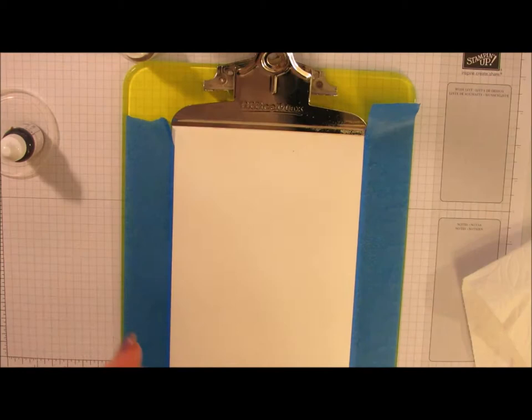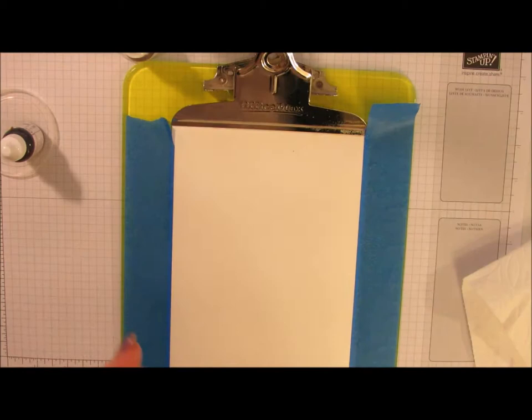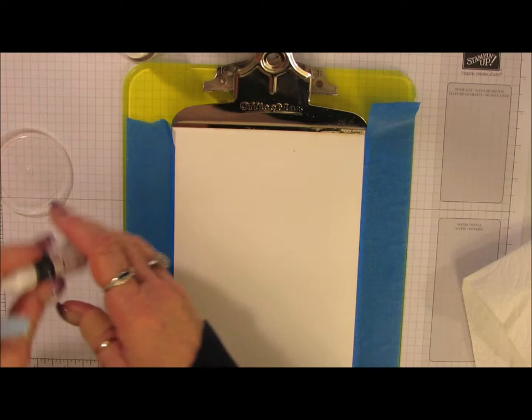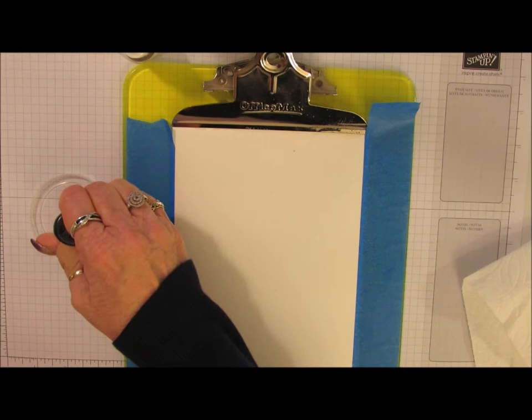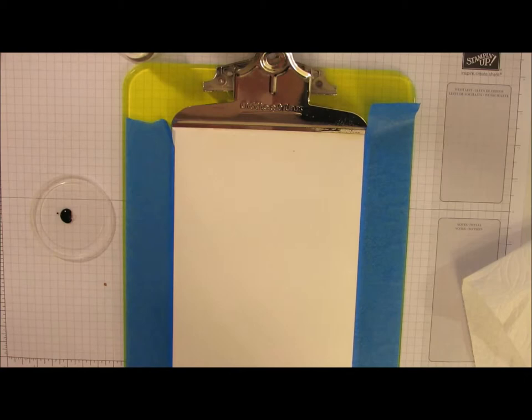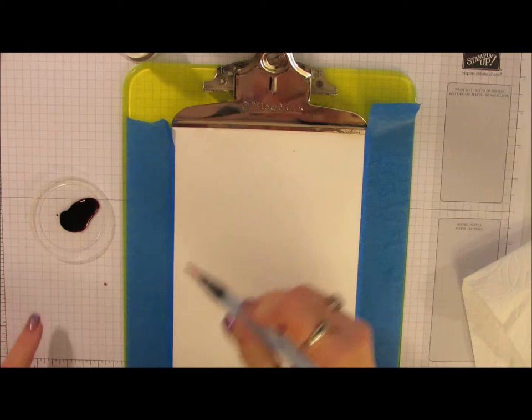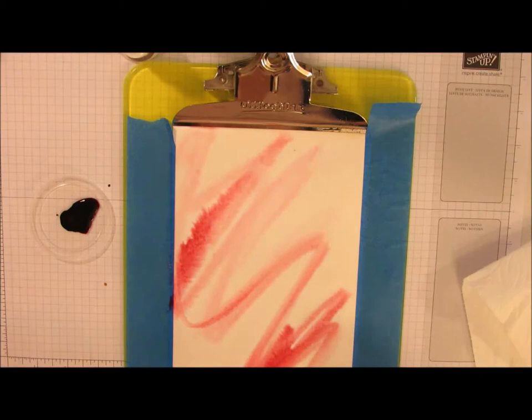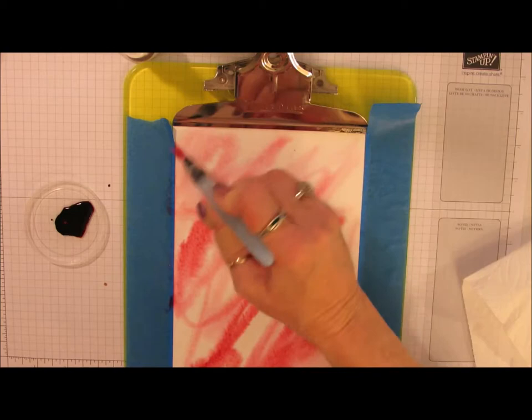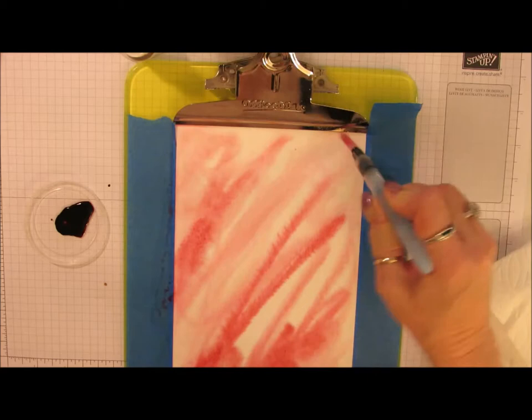I'm going to start with the Berry Burst ink and I'm going to put a drop in the lid here - actually that's three drops but that's okay. I'll take my aqua painter and squeeze a little water in there and then I'll just start scribbling on my paper. I want to make sure you get the ends.